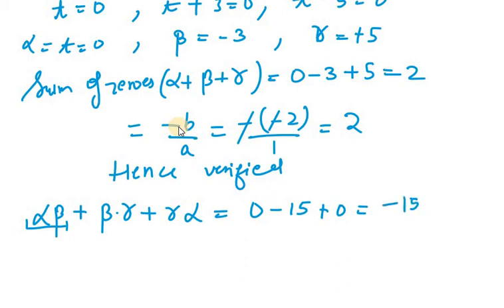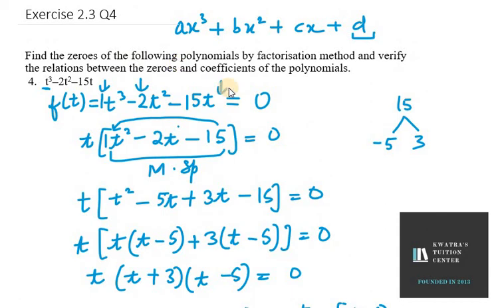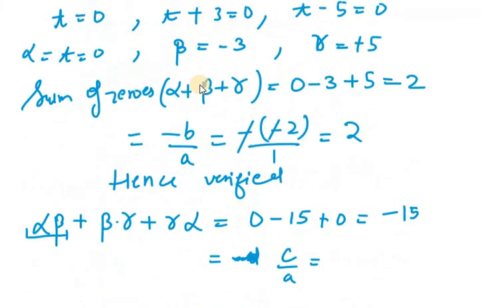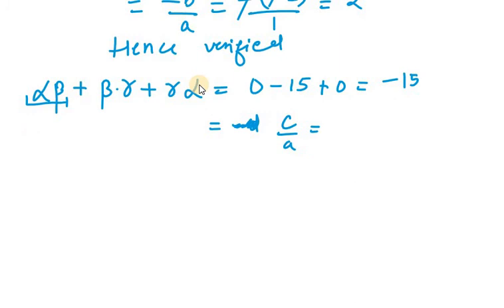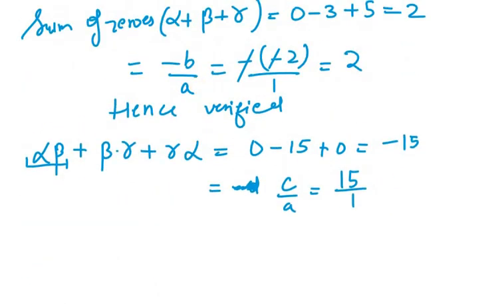Now we know by formula it is c over a. So c in this case is minus 15. And a is 1. So it will be minus 15 over 1. Hence verified for the second part.